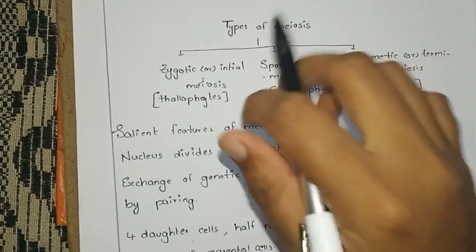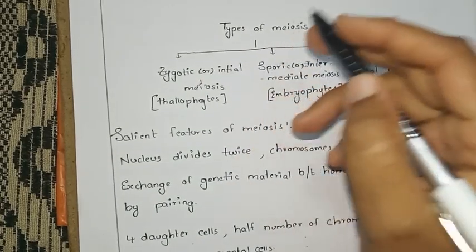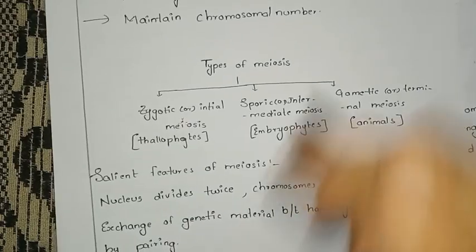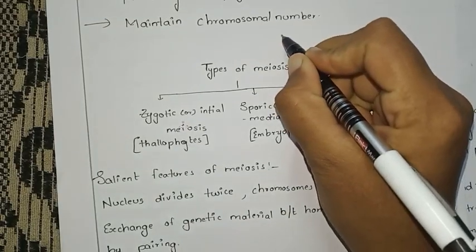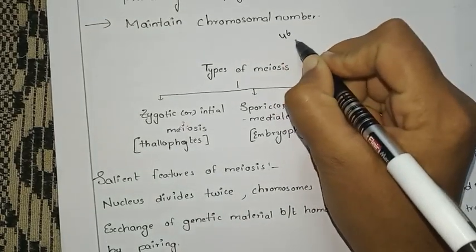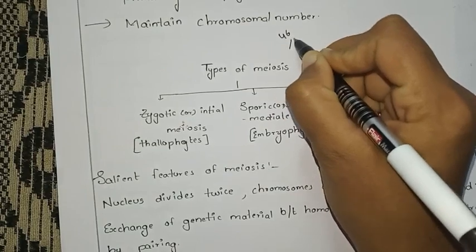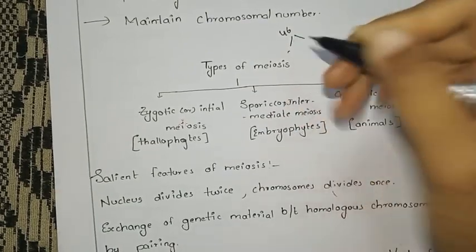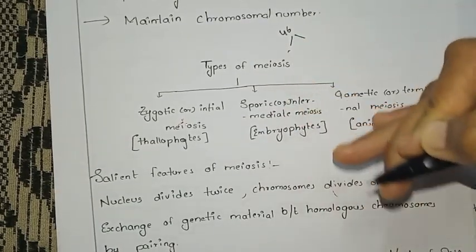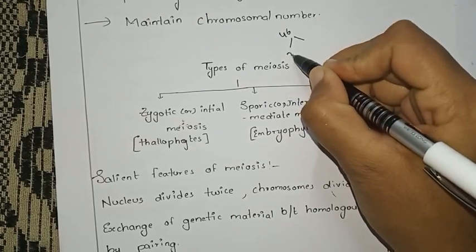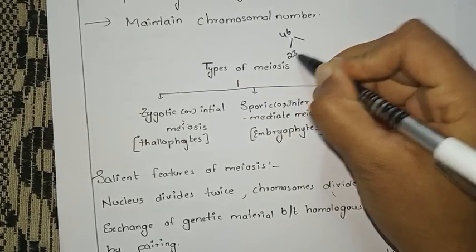Meiosis is a reduction division. In parents, there are 46 chromosomes. These 46 chromosomes reduce and increase from generation to generation. So, meiosis is a reduction division occurring in germ cells.